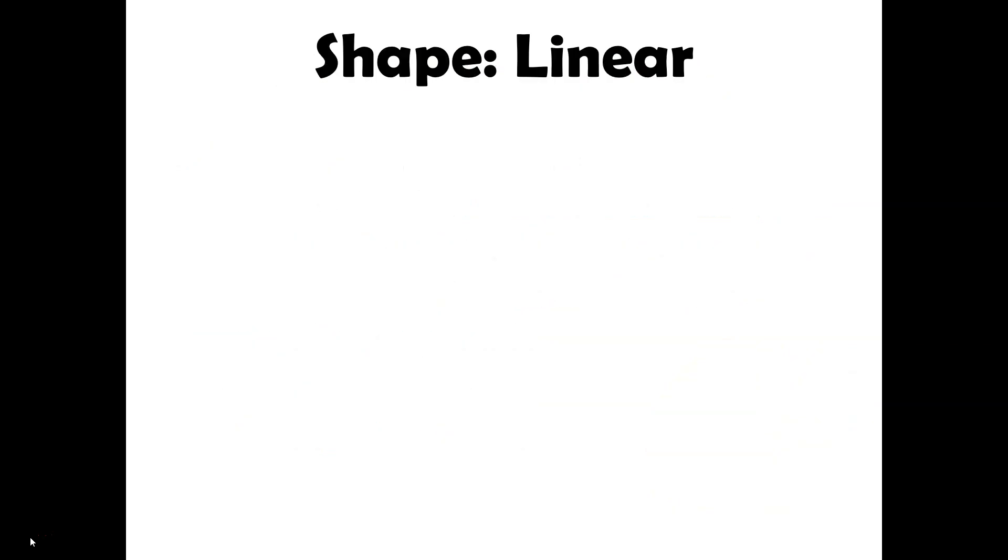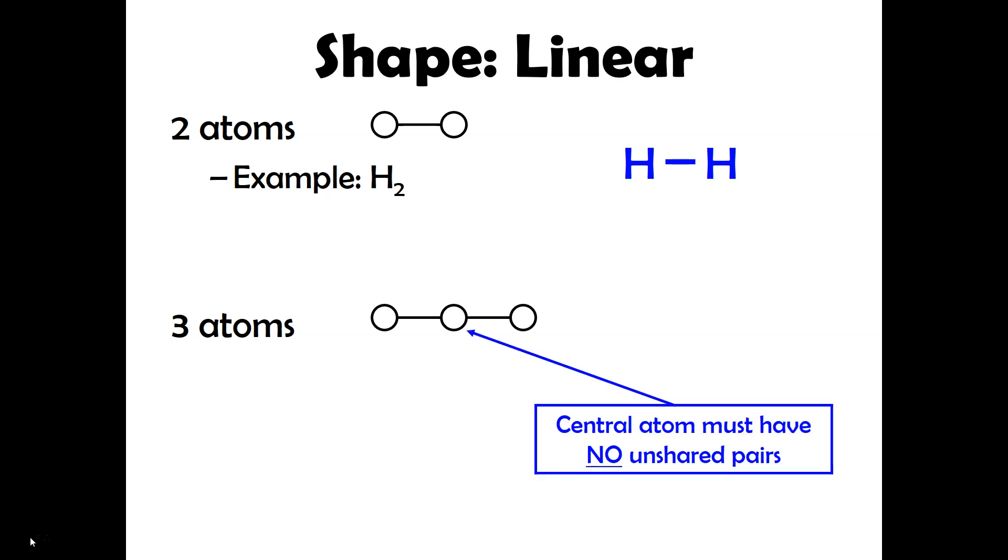The first shape we're going to discuss is called Linear. And just like it sounds like, we're talking about a line. So you could have a scenario where you have two atoms, for example, in the molecule H2. But the more common scenario, I would say, is where you have three atoms. So when you have three atoms, basically the important thing that you really want to zoom in on is the fact that the central atom has no unshared pairs around it or no lone pairs around it.